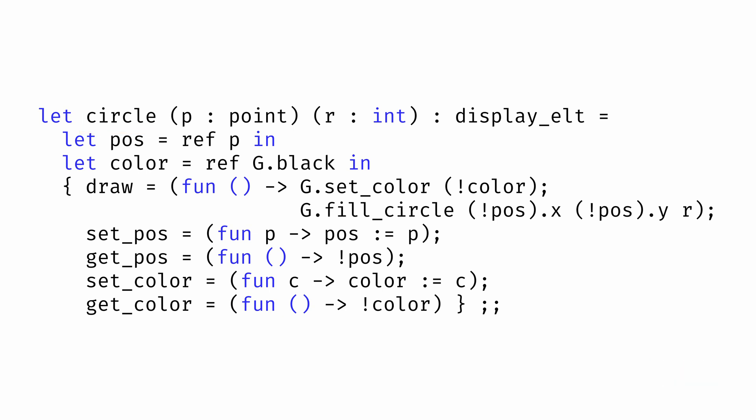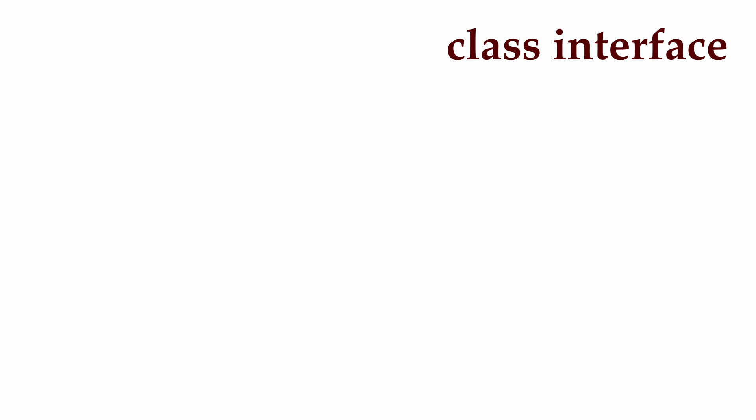Many languages, including OCaml, also offer particular syntax for object-oriented programming. So instead of using objects implemented directly as records, as we've seen so far, let's instead implement these display elements using the object-oriented syntactic support provided by the OCaml language. First, we can start by defining an interface, a specification of what methods an object will have. To do so in OCaml, we can use the class type keywords followed by the name for the interface, in this case displayelt.